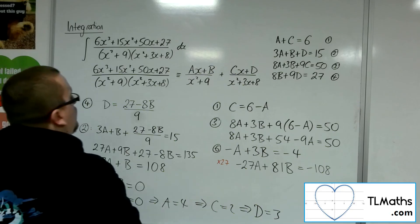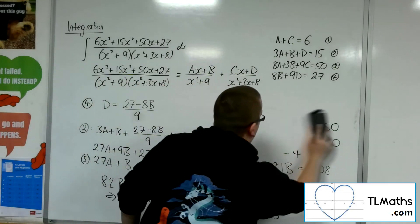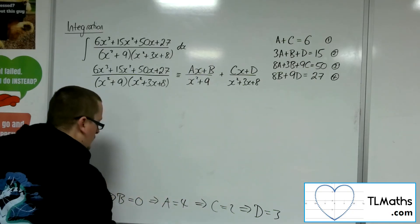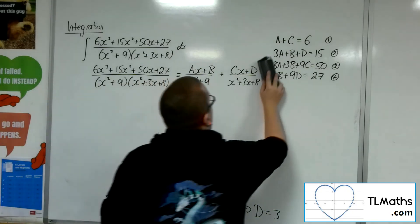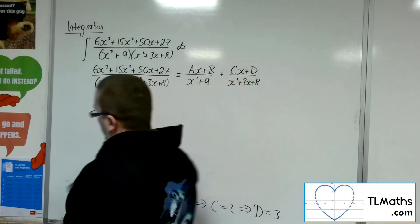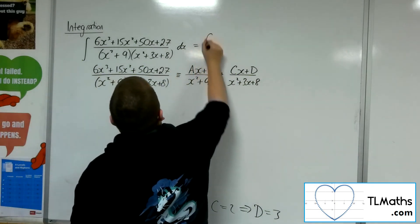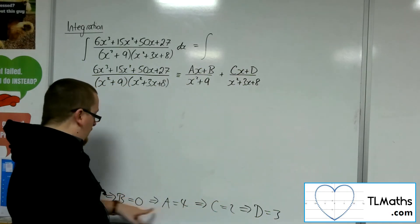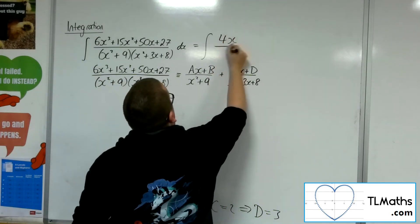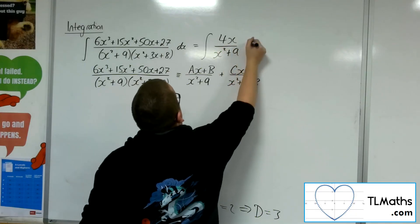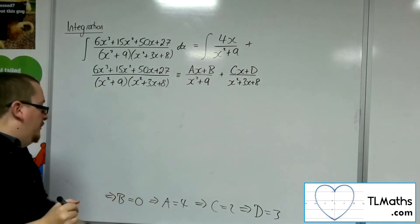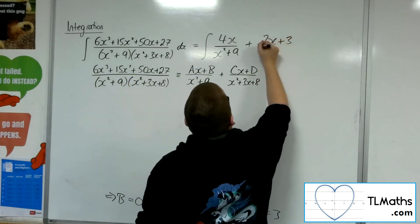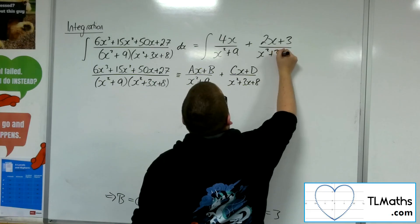So what I can now do with this information is now say that this is the same as the integral of ax plus b, so 4x plus 0. So 4x over x squared plus 9 plus cx plus d. So 2x plus 3 over x squared plus 3x plus 8.